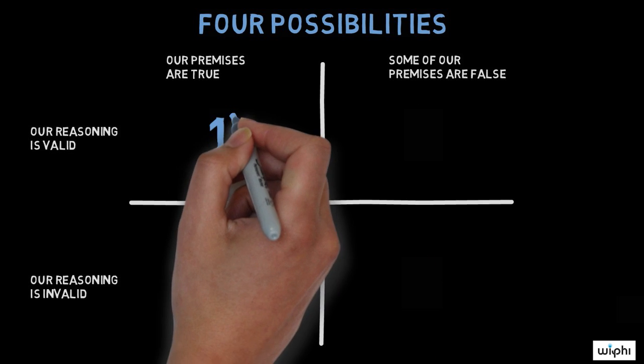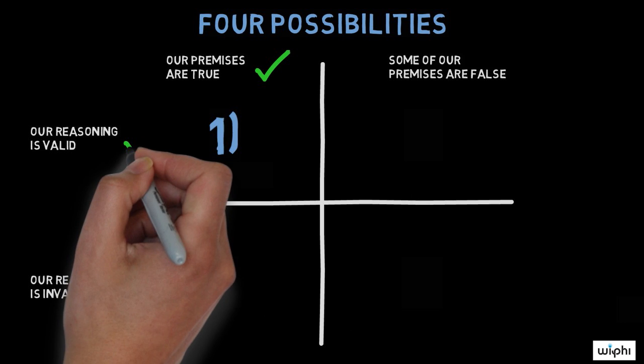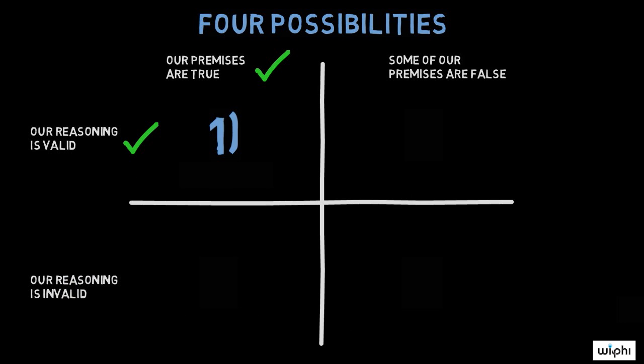Possibility one, we may have our facts right, our premises are true, and we may use them properly, our reasoning is valid.